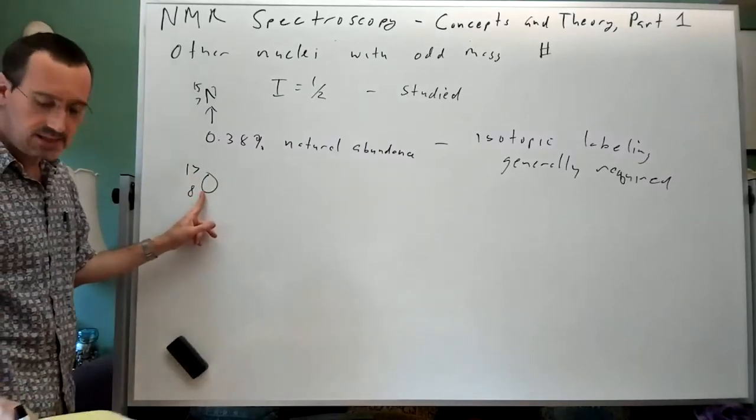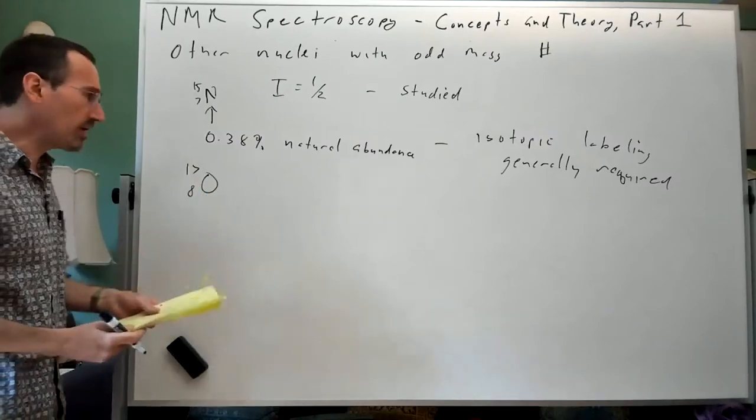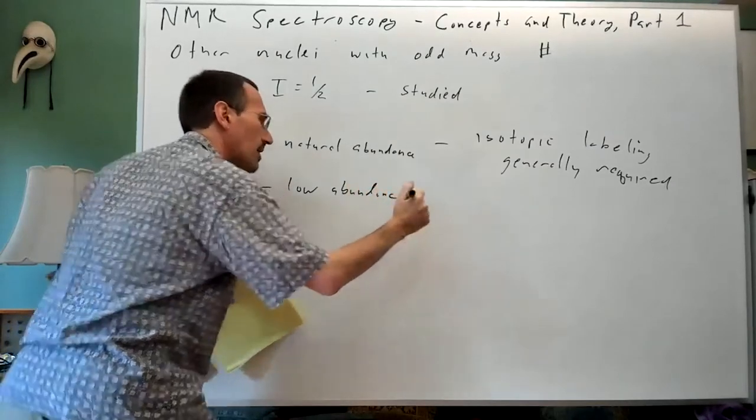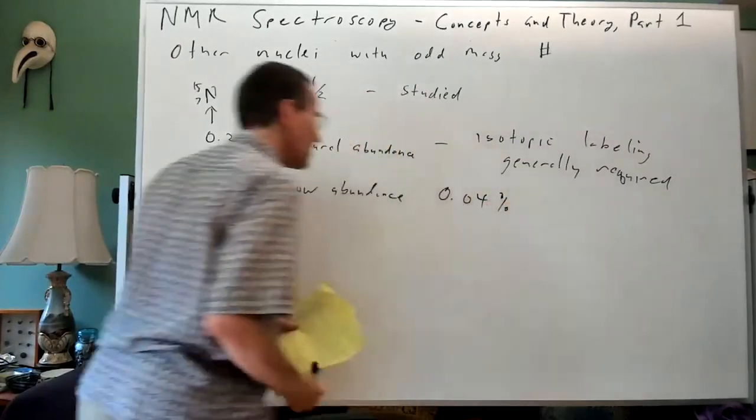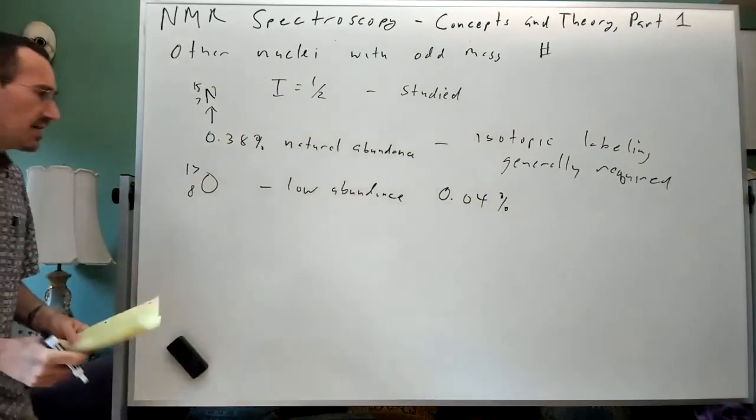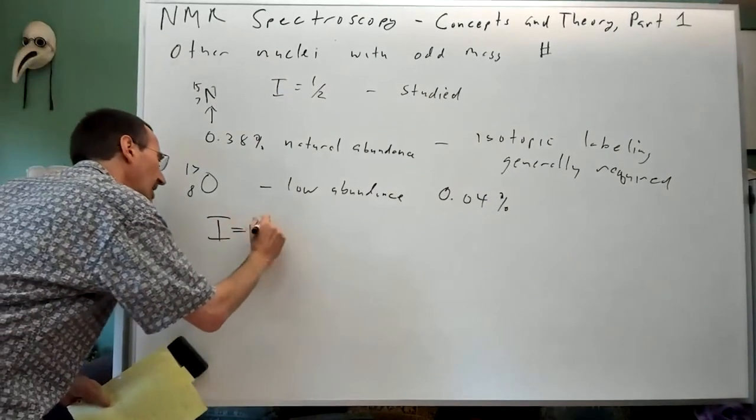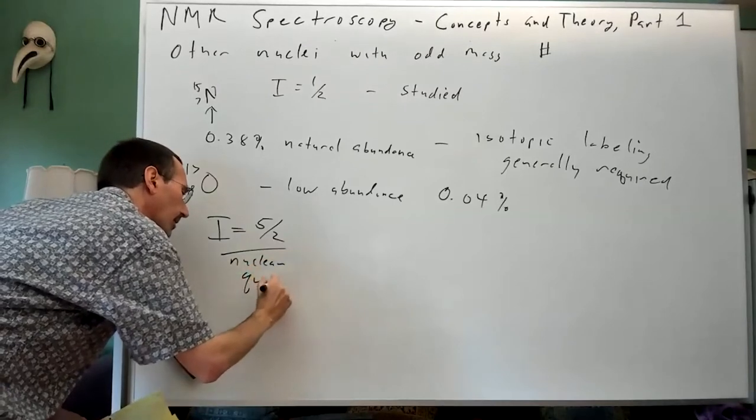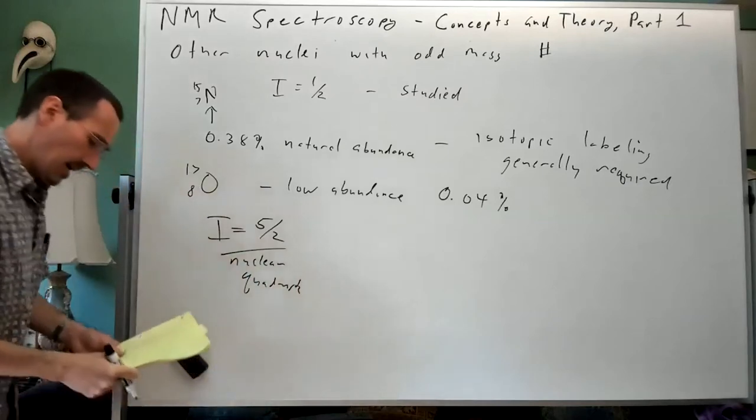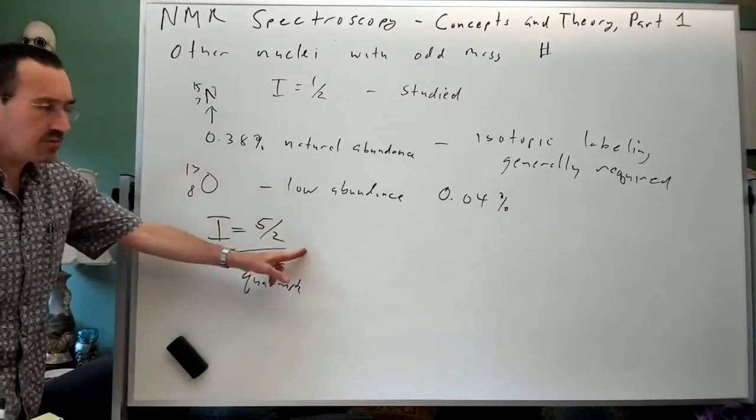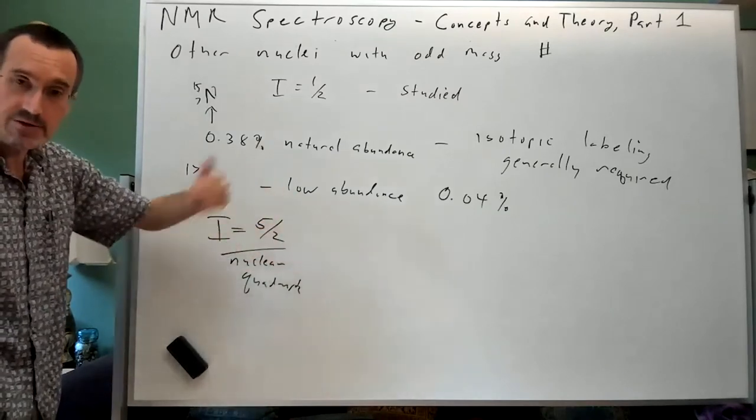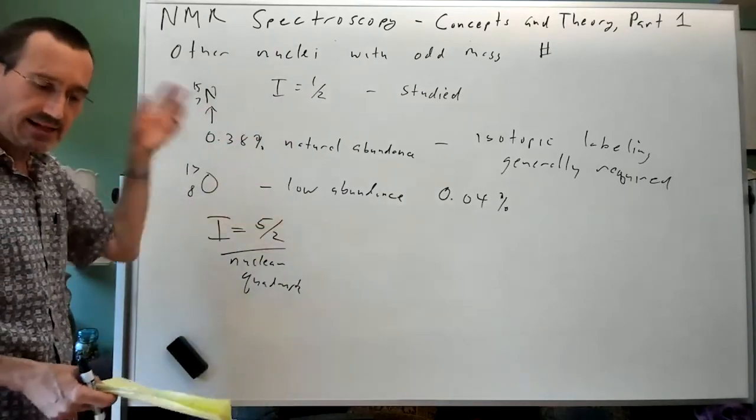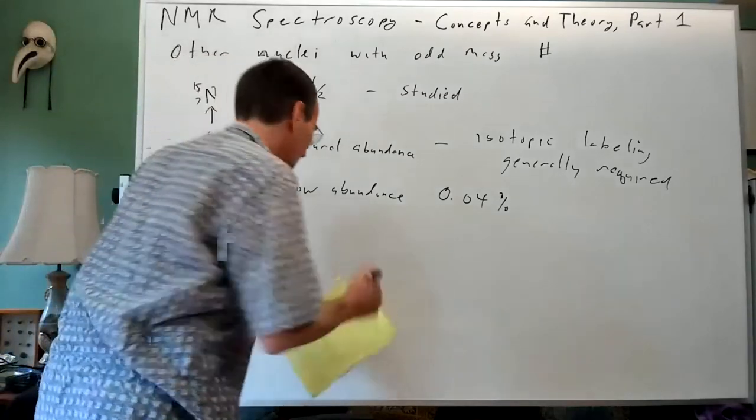Another nucleus with an odd mass number is oxygen-17. It's only got a very low abundance, 0.04%. But more importantly, O-17 has a spin number of five halves. That gives rise to having a nuclear quadrupole, and as a result you have rapid relaxation and it's not generally studied.